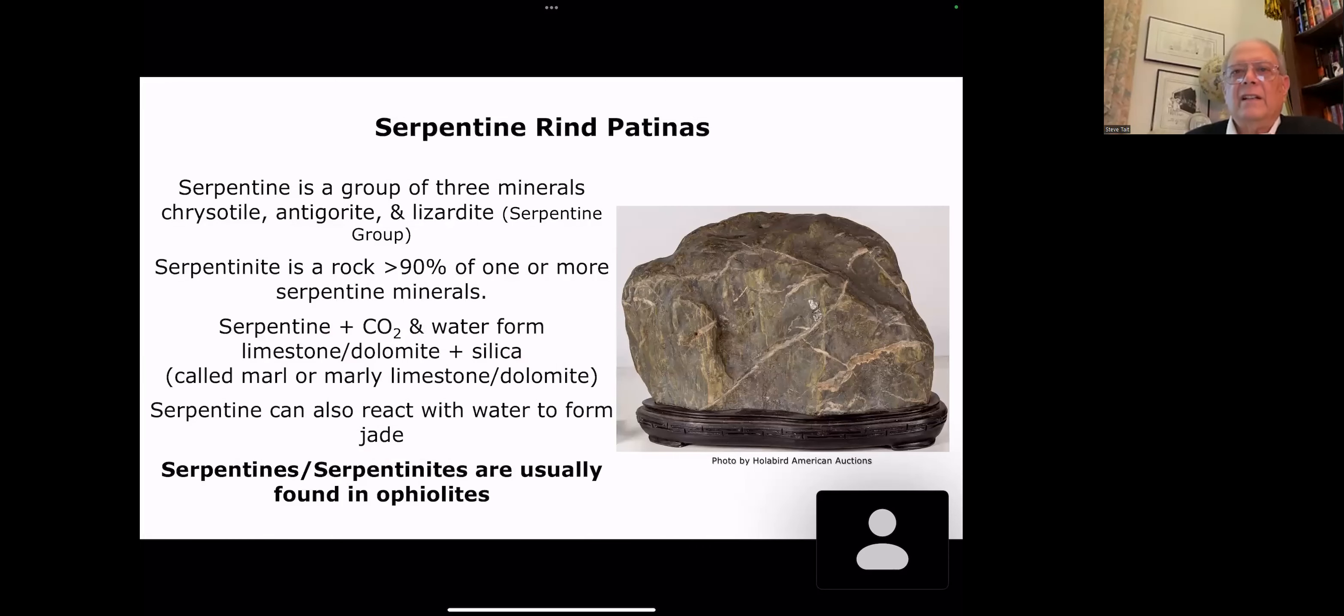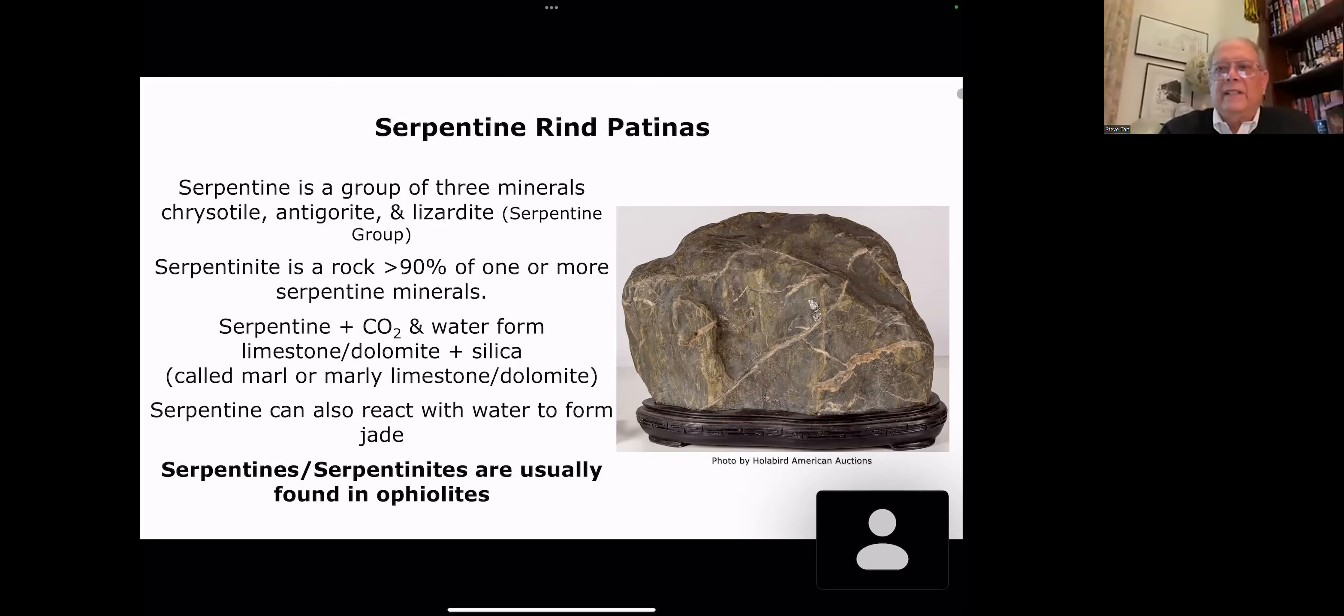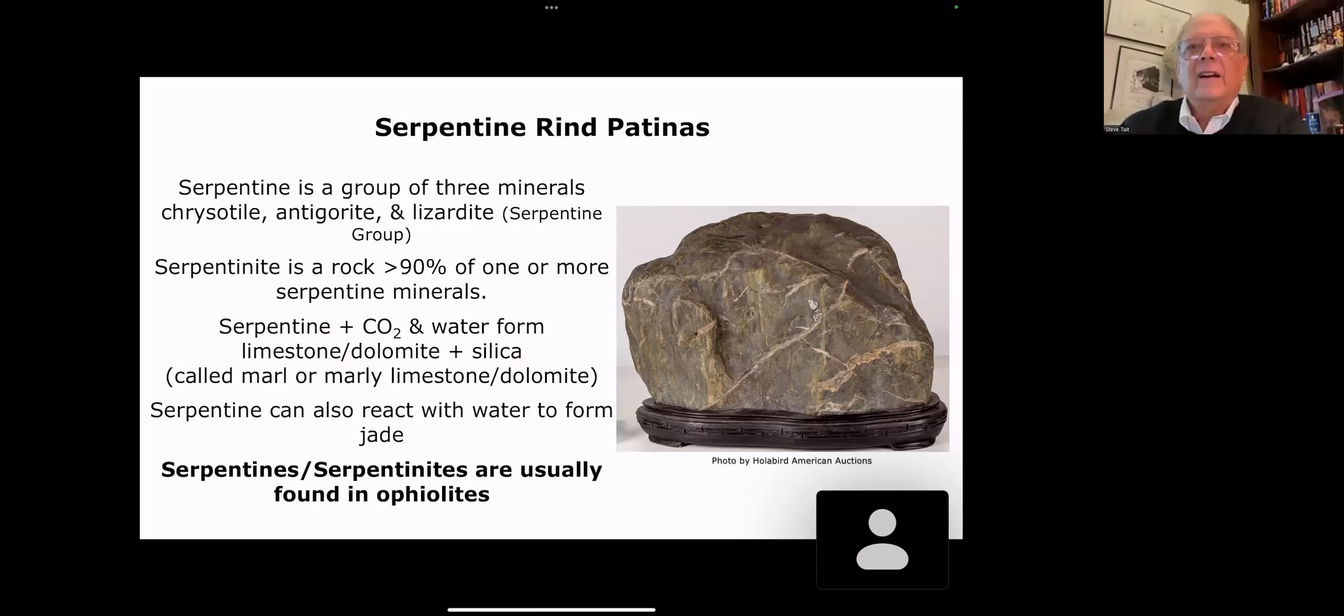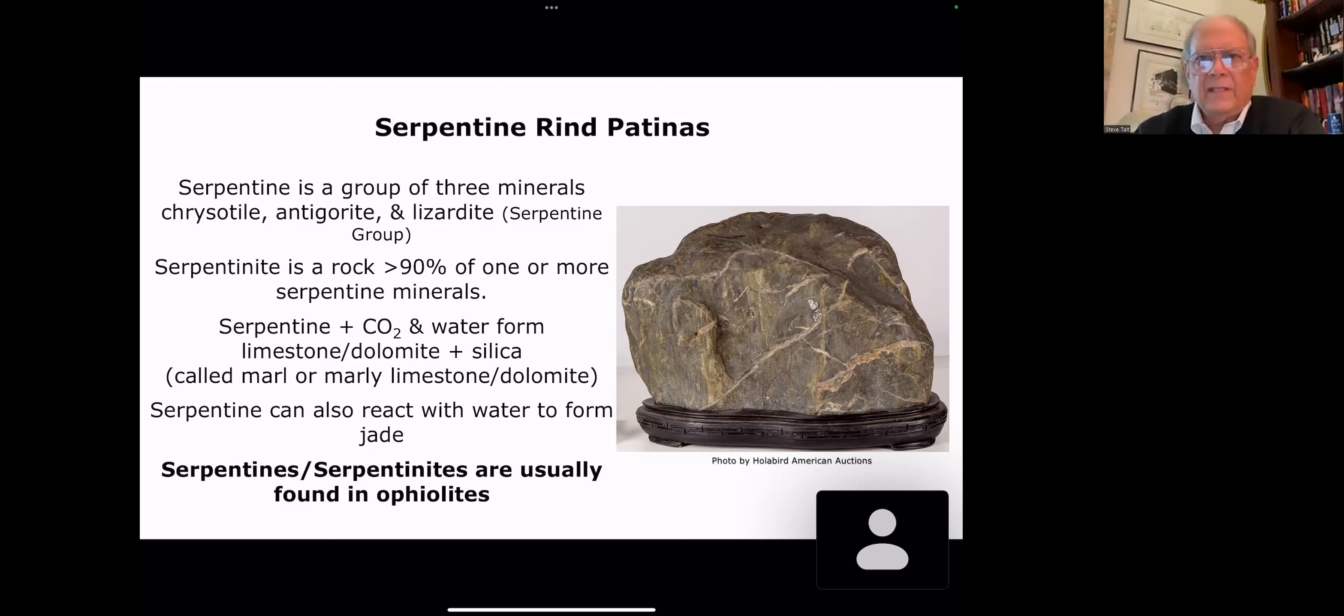Let's move on to serpentine. Serpentine is short for serpentine group. The serpentine group has three different kinds of minerals, chrysotile, antigorite, and lizardite. Serpentinite is a rock where you have greater than 90% of one or more of the serpentine minerals. Serpentine will react with carbon dioxide and water to form limestone or dolomite and silica. And this is called marl or marly limestone. Serpentine can also react with water to form jade. And there's a lot of work going on with ophiolites and the serpentine that's in ophiolites to create the jade in little nodules. Serpentinites are usually found in ophiolites. Very common to find them there.